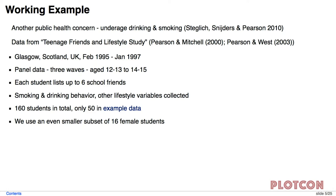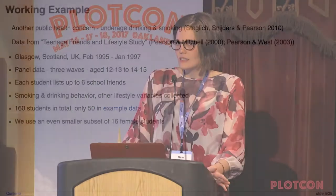So instead, I'm going to move to the data that I do have that I've been working with for a little while now while I'm working on my dissertation. So this is another public health concern. We have a data set with underage teenagers in it, and we want to look at their drinking and smoking behavior. This is some old data, pretty old, about 20 years old. And we have some panel data, three waves of teenagers observed in this study, starting when they were 12 and 13 to when they were 14 and 15. Each student is surveyed, and they list up to six friends. So this is going to be a directed network. They also collect their smoking and drinking behavior, as well as some other lifestyle variables and information about their families. The study has 160 students in total, and I'm going to use an even smaller subset of 16 female students.